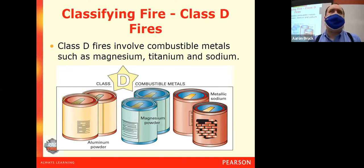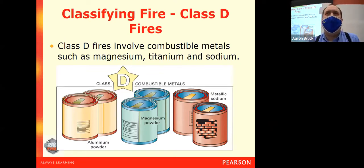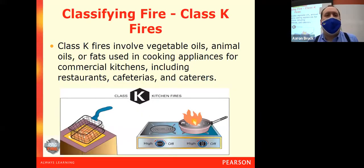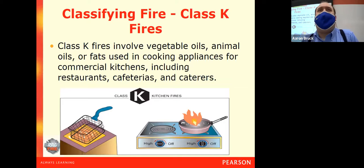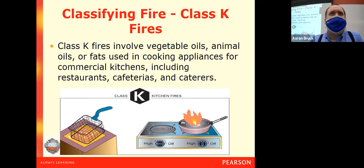So we've covered A, B, C, and D. Now you might ask yourself: why are we going from D to K? That doesn't seem to make a ton of sense — until we figure out that K is a kitchen fire. Class K stands for kitchen. We're talking about animal fat, greases, and vegetable oils — things associated with commercial fryers, restaurants, cafeterias, and catering — fires that can start inside of pans.